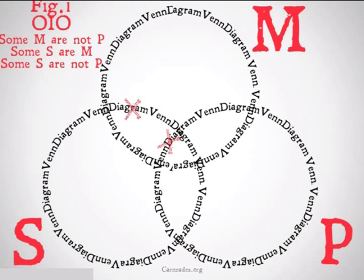We're going to look for our conclusion. Even though it may seem that this conclusion appears, it in fact doesn't, because both of these X's could be bumped out of that area — one into the region of S, P, and M, and the other into the region of M by itself. So, this is going to be invalid.